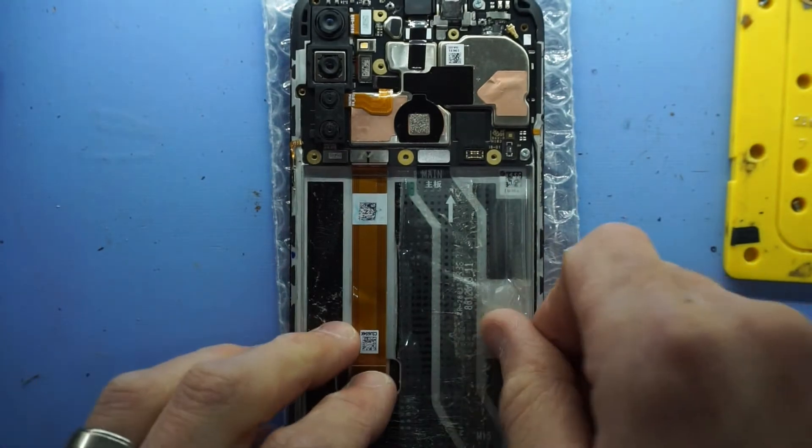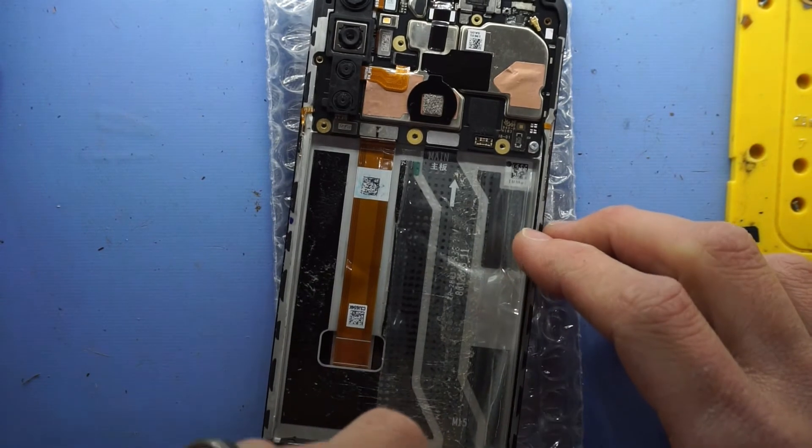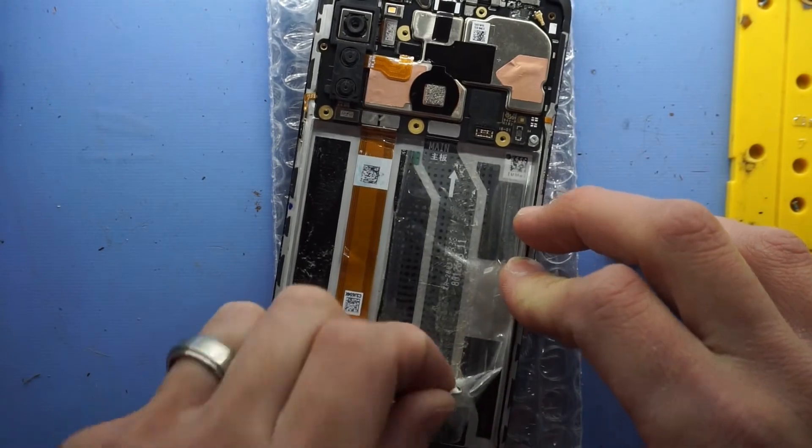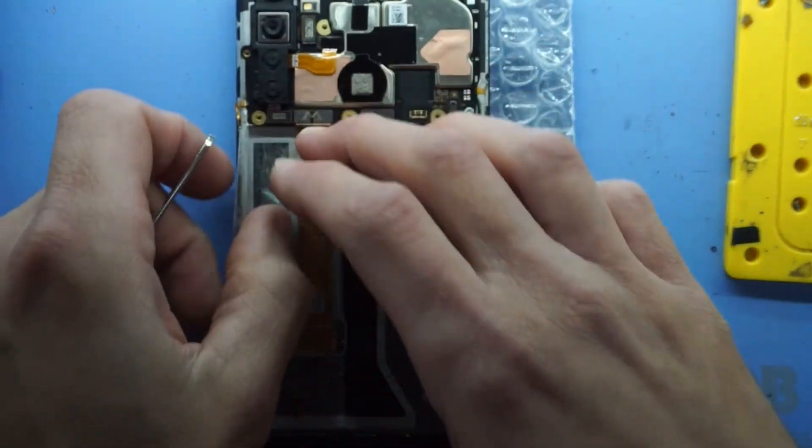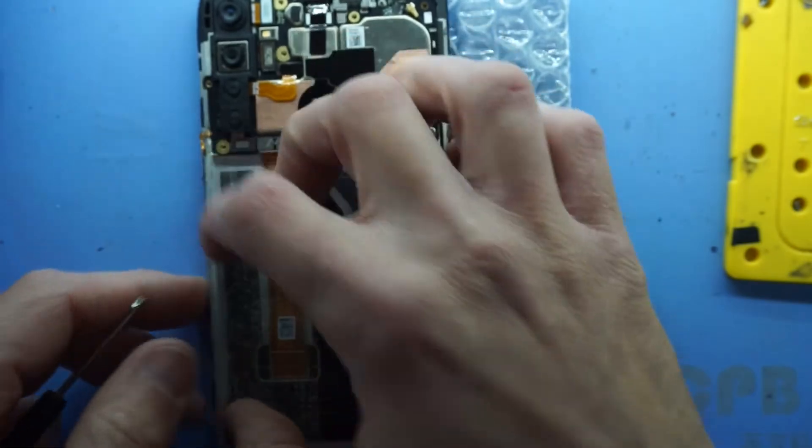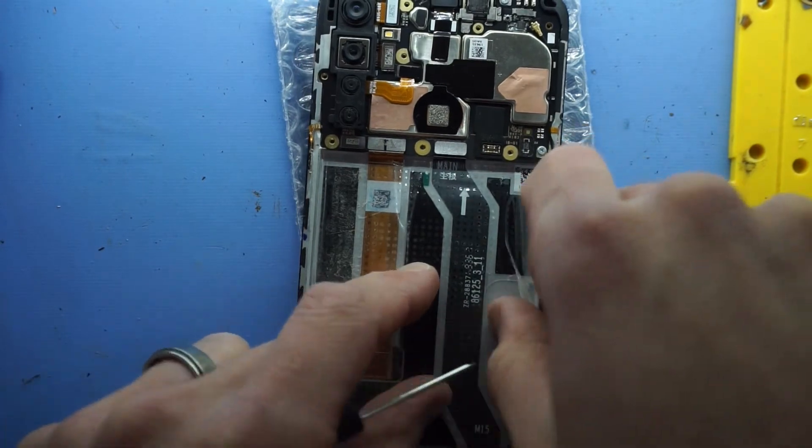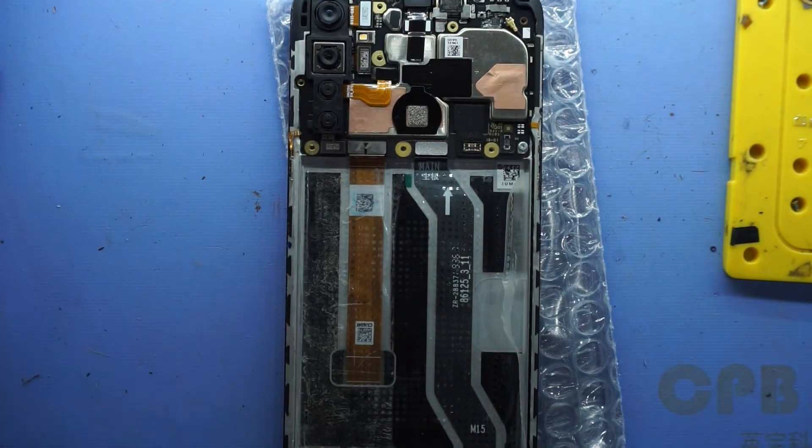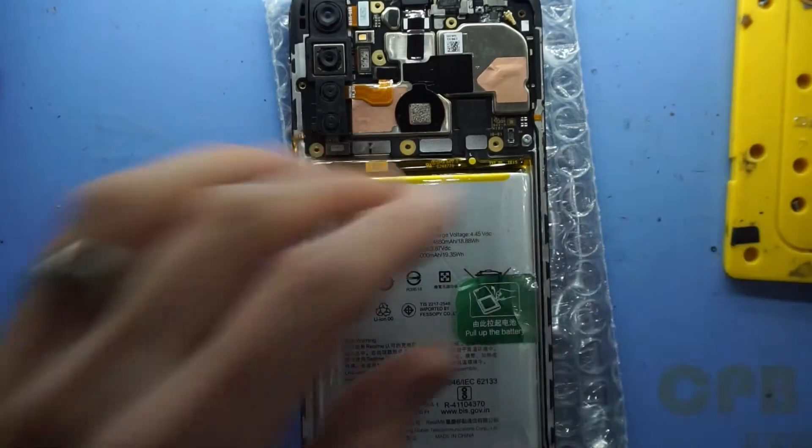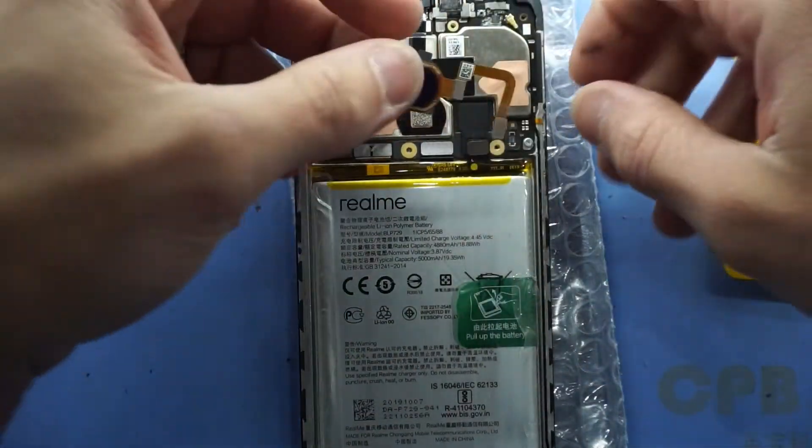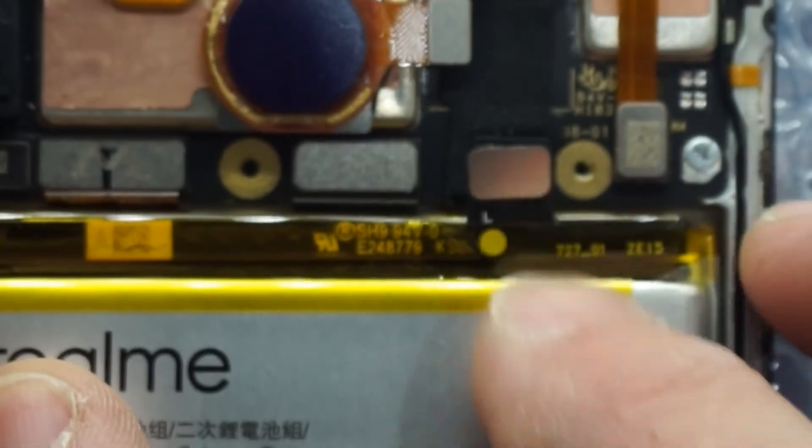So from here it's a matter of reinstalling the battery, getting it all back together again, if I can actually get this off. There we go. One battery connected, pushed in, disconnected for a second. Reconnect the fingerprint connector. Reconnect the battery.